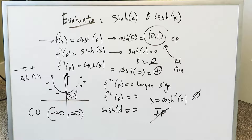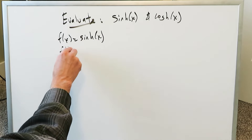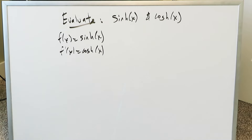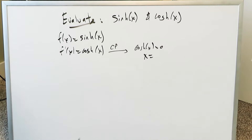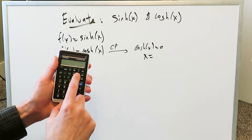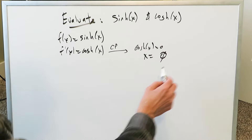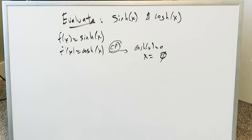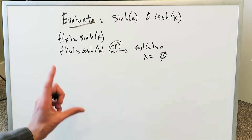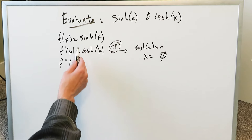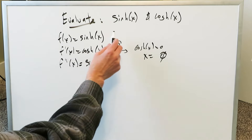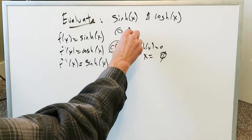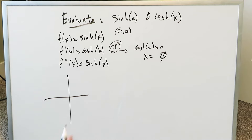Now let's look at hyperbolic sine. The first order derivative of hyperbolic sine is hyperbolic cosine. Setting cosine hx equal to zero and solving gives x equal to the inverse hyperbolic cosine of zero, which is undefined — we get an error. That tells us there is no critical point for hyperbolic sine; no local minimum or maximum will develop. The graph of hyperbolic sine passes through the origin at (0, 0).